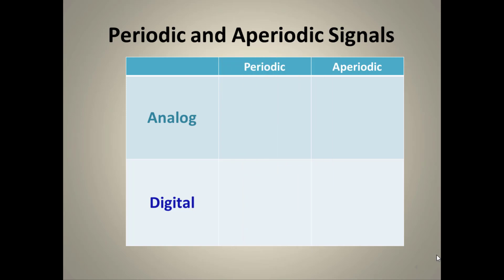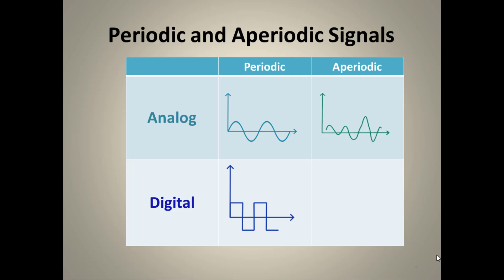A simple sine wave is an example of a periodic analog signal, and a simple square wave is an example of a periodic digital signal. An aperiodic analog signal is not repeated, and similarly an aperiodic digital signal is not repeated — we cannot reconstruct it again or predict what the next signal would be.